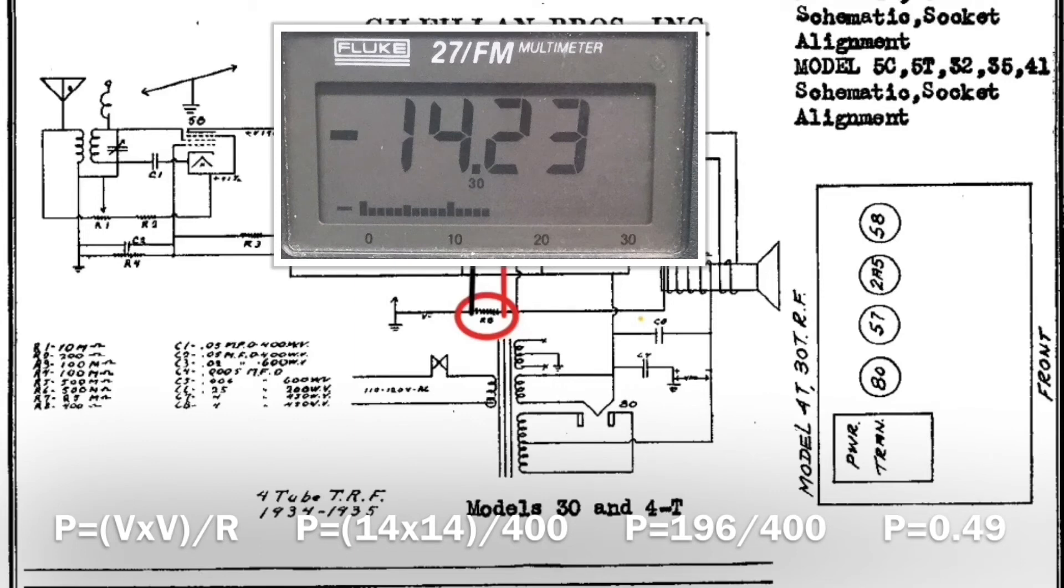So in this case, we'll say 14, and you multiply 14 by itself, so 14 times 14 equals 196. We'll take the 196, divide that by 400, and you'll see we come out with 0.49 watts. So that's a match to what we calculated by working the math looking at current. So just another way to get there.